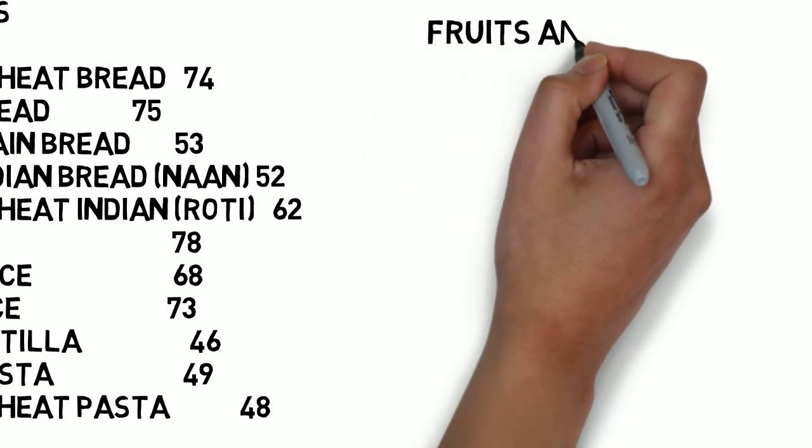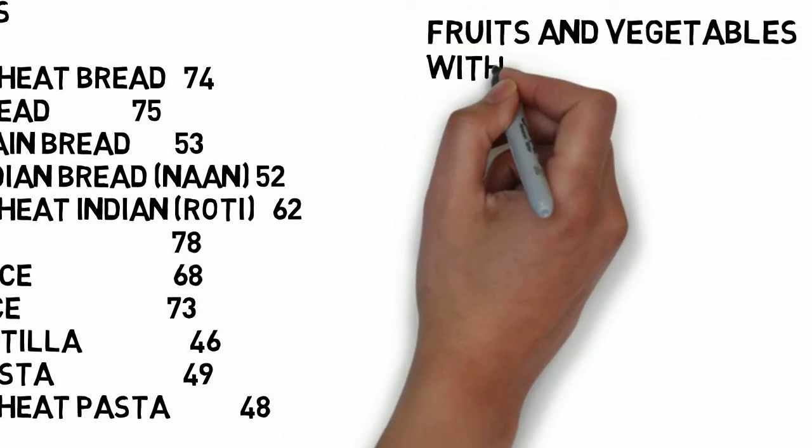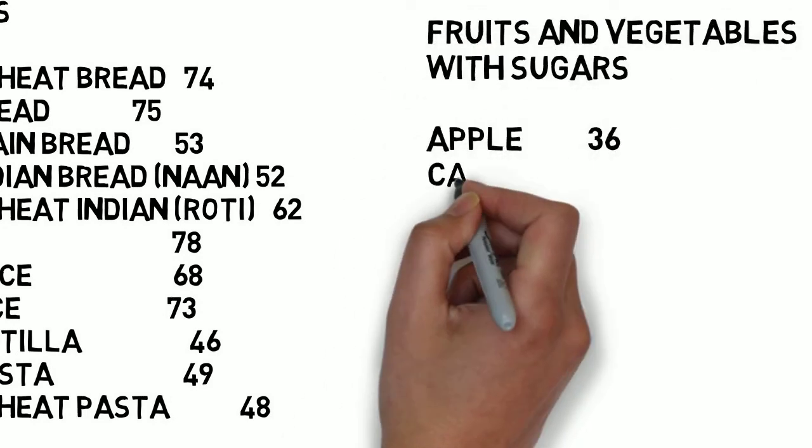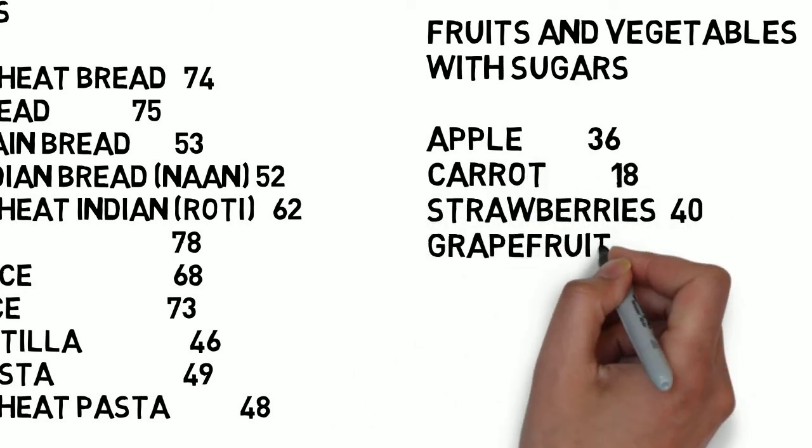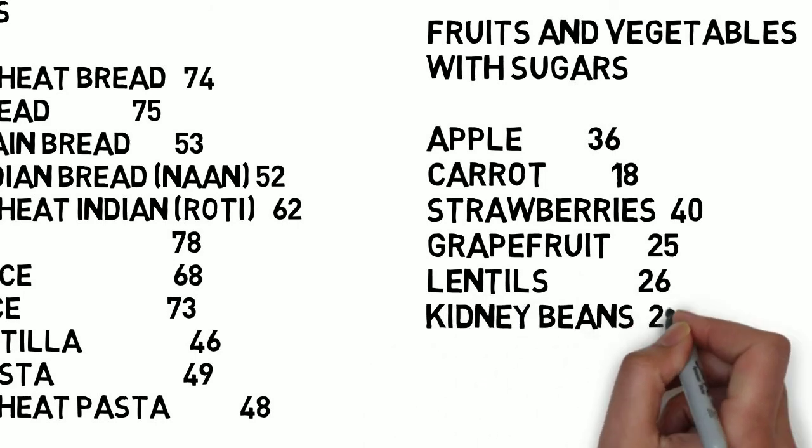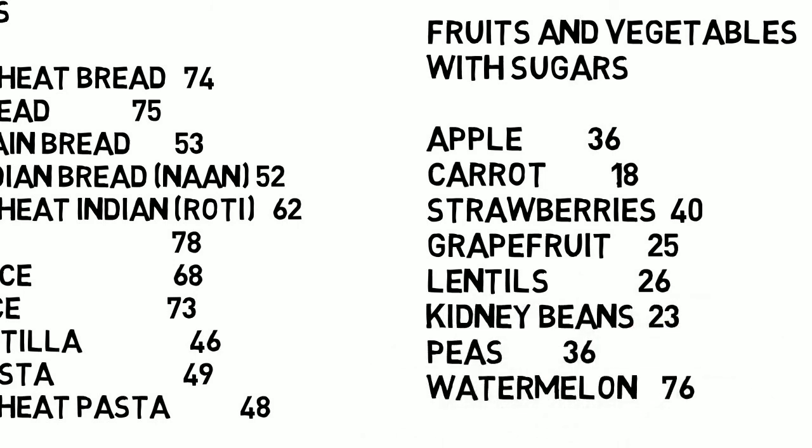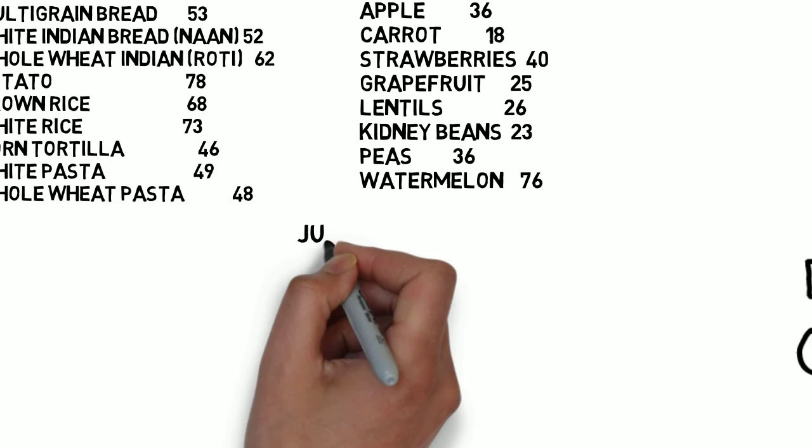Now, compare this to the fruits and vegetables that have lots of sugars. Apple, 36. Carrot, 18. Strawberries, 40. Grapefruit, 25. Lentils, 26. Kidney beans, 23. Peas, 36. And watermelon, the worst, at 76.